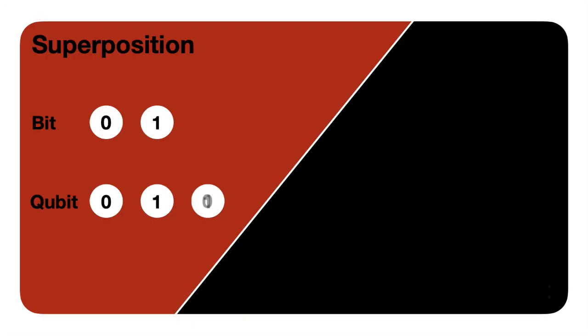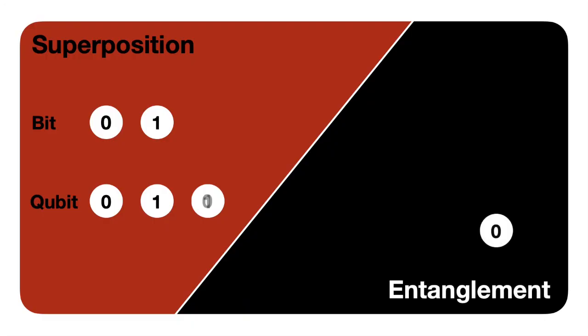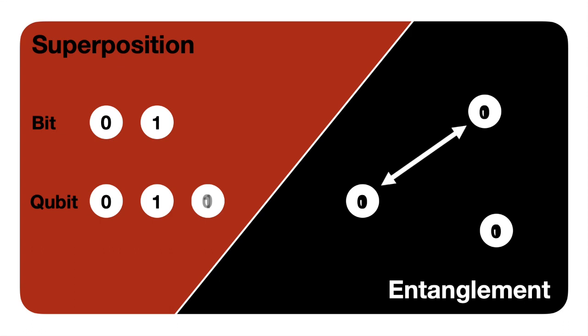The other effect which makes quantum computers possible is called entanglement. It is the ability of separate qubits, which already store more information than their classical counterparts, to work together to execute an algorithm and output a result.